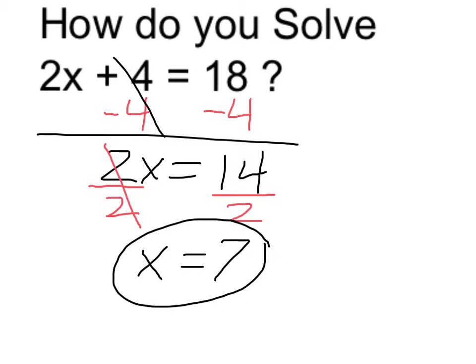So I'm proposing my answer is 7. Now to check, I can take my proposed solution, x equals 7, and plug it into my original equation to make sure that it's true. 2 times 7 is 14, and yes, 14 plus 4 does equal 18.